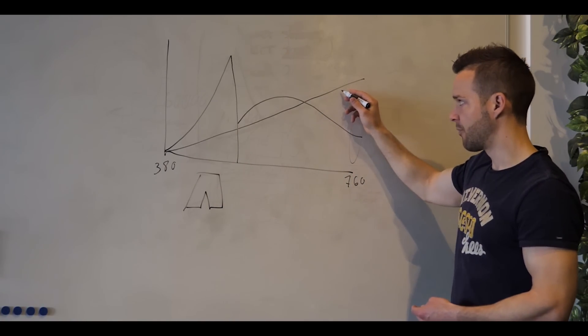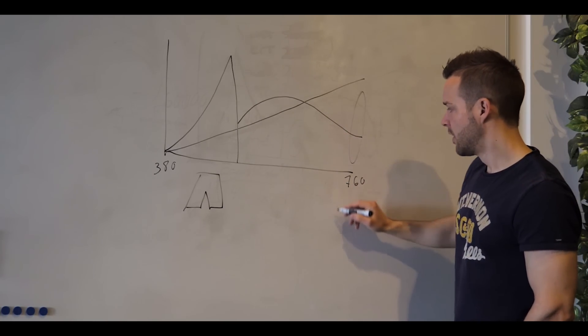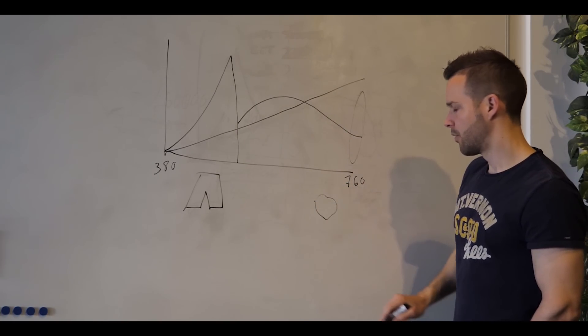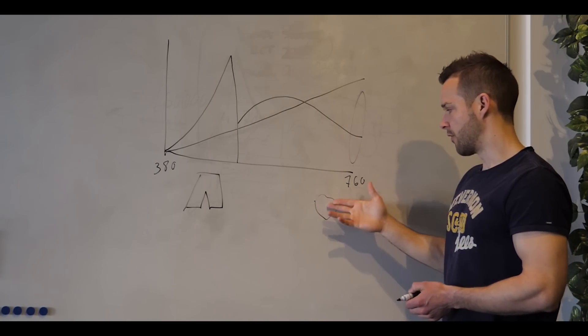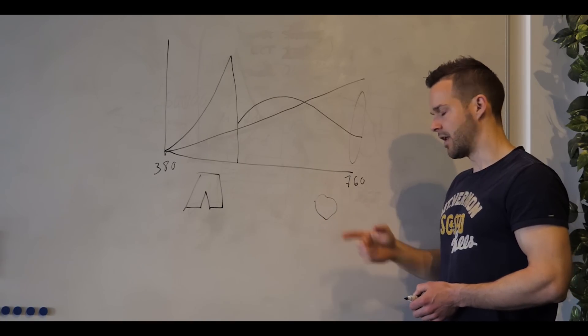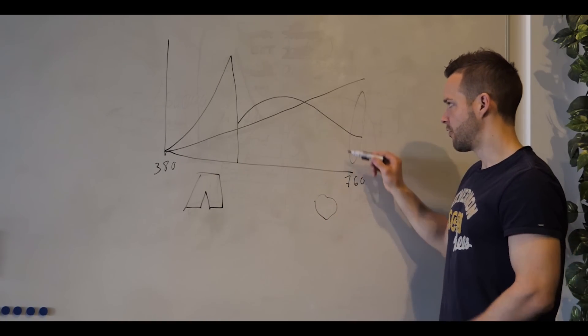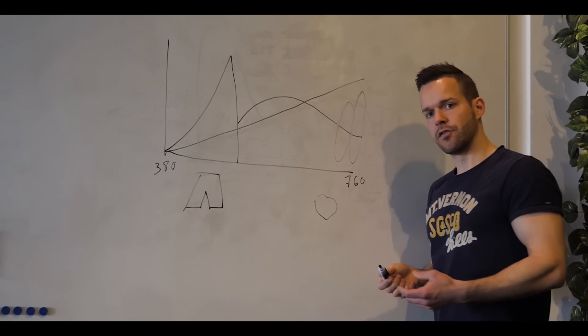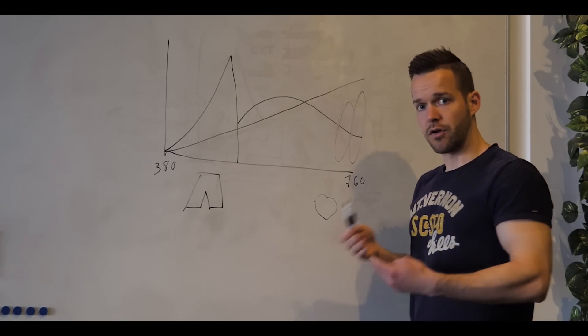On the other hand, if we move down to this area here, where we have the red wavelengths, let's say we have meat here in the supermarket where you have to have a nice red color, you need to have energies in this area.